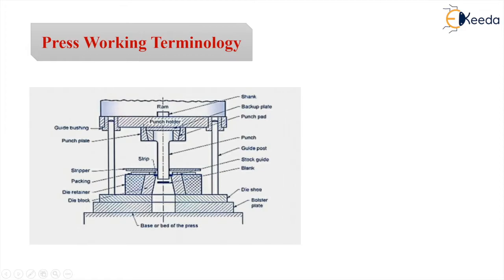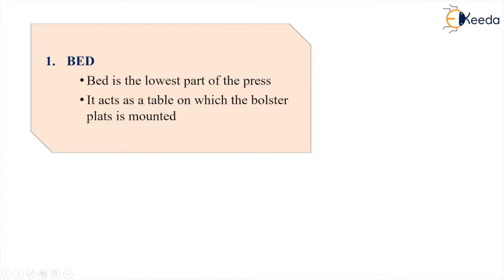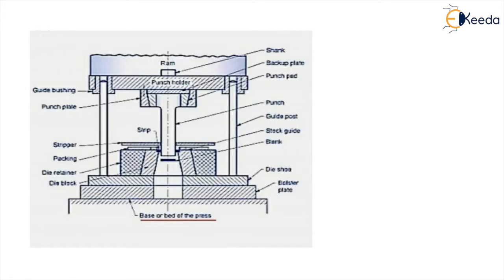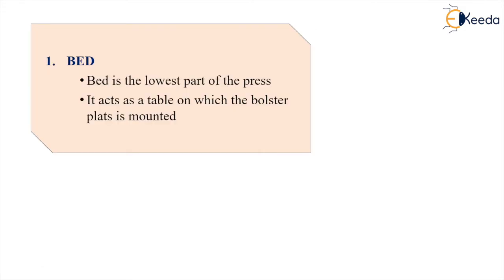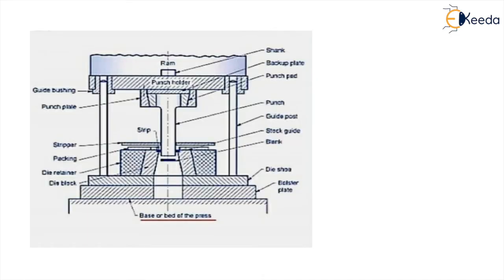The bed is the lowest part of the press and acts as a table on which the bolster plate is mounted. As shown in the diagram, this is the base plate on which the bolster plate is mounted, and this base is the foundation on which the entire die setup is mounted.